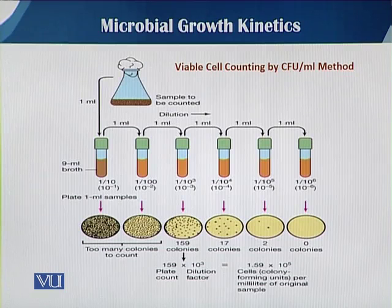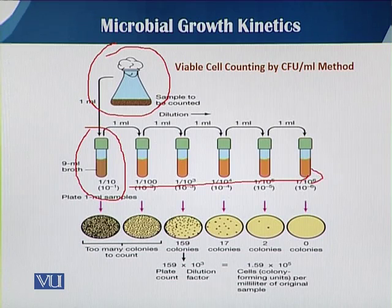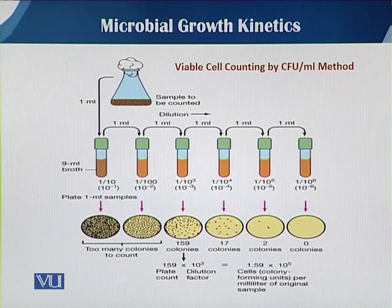In the dilution method, if we have a sample grown in a flask, we take 1 mL of the sample and dilute it into a specific volume, then gradually dilute further, forming different dilutions. We then take a sample from each dilution and culture it on a plate. The number of colonies decreases as the dilution increases, allowing us to easily estimate the viable cells present in any culture.